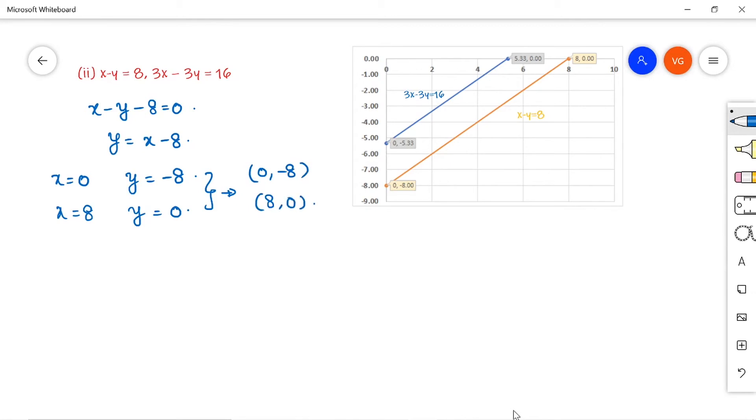Similarly from the second equation, I will get y is equal to 3x minus 16 divided by 3. So we will get it as x minus 16 by 3.